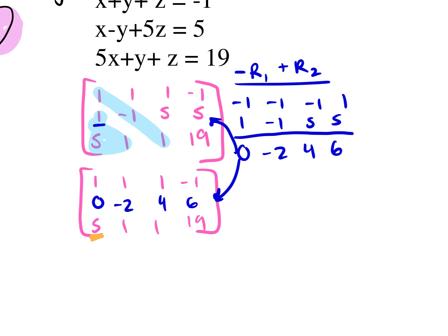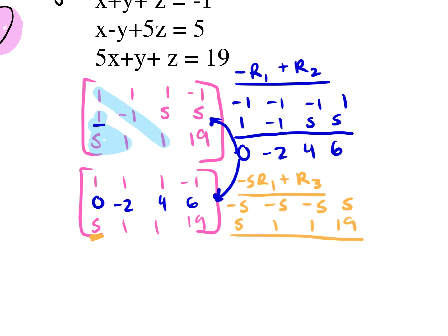To change that five to a zero, I multiply the first row by negative five and add that to row three. So row one times negative five gives: negative five, negative five, negative five, five. Combining that with the third row gives the new row three: zero, negative four, negative four, twenty-four.